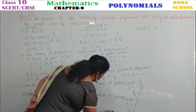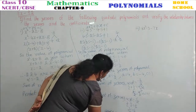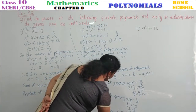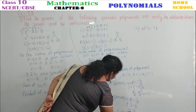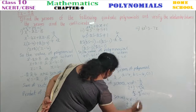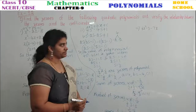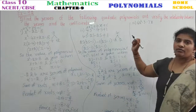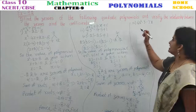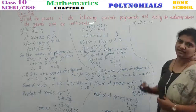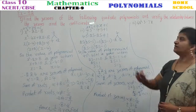Hence it is verified. Similarly, we need to verify all the problems. See the third problem: 6x² - 3 - 7x.